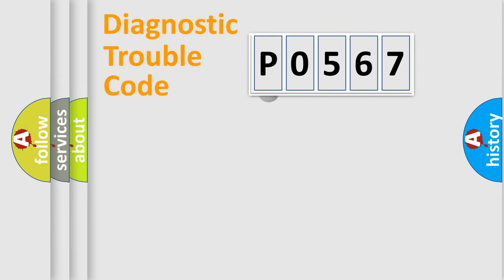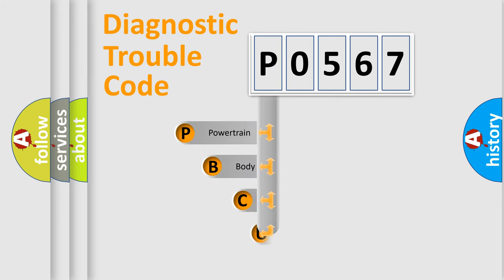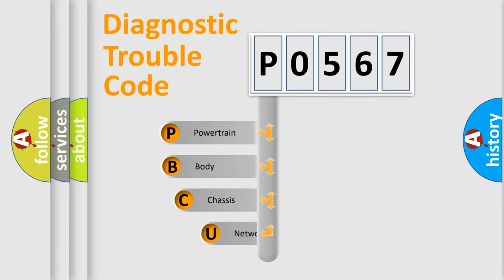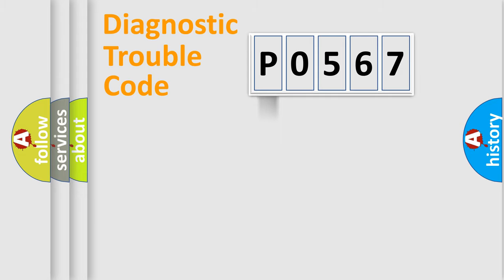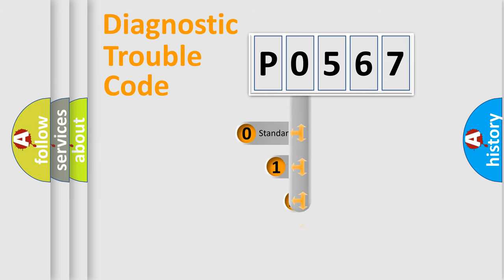First, let's look at the history of diagnostic fault code composition according to the OBD2 protocol. We divide the electric system of an automobile into four basic units: powertrain, body, chassis, and network. This distribution is defined in the first character of the code.